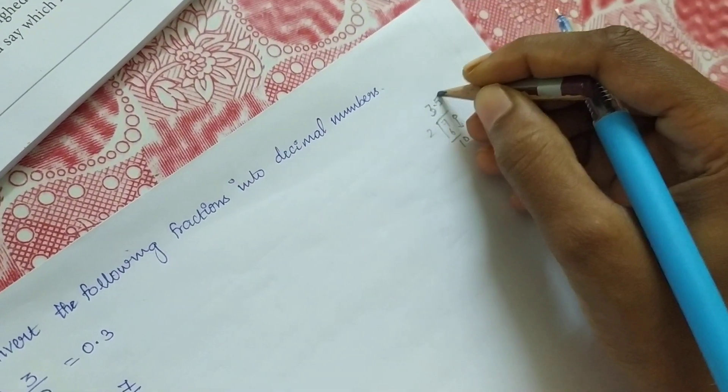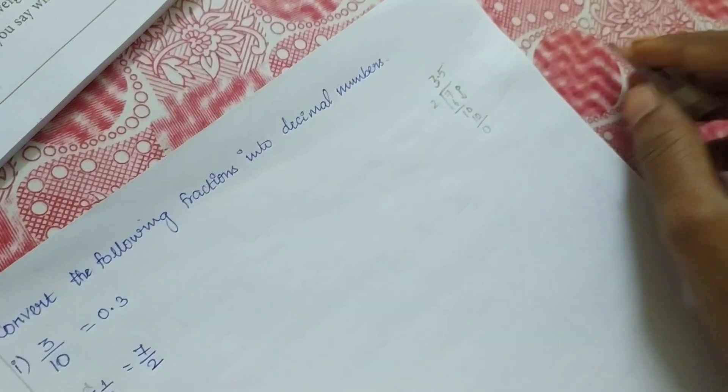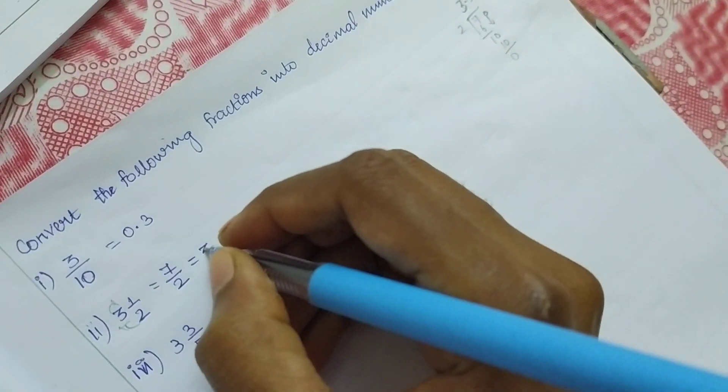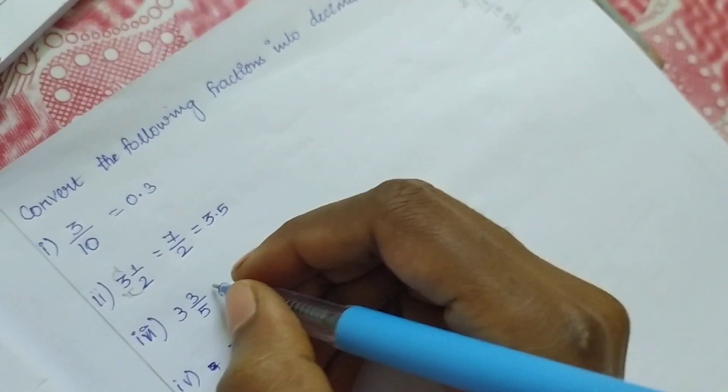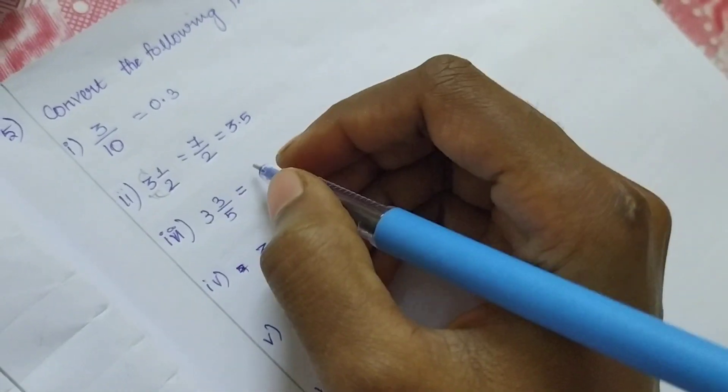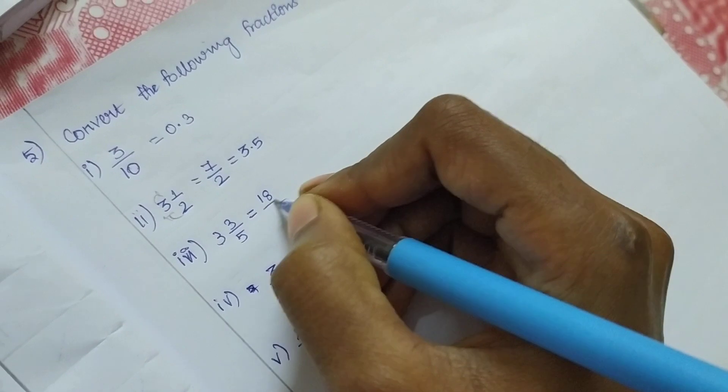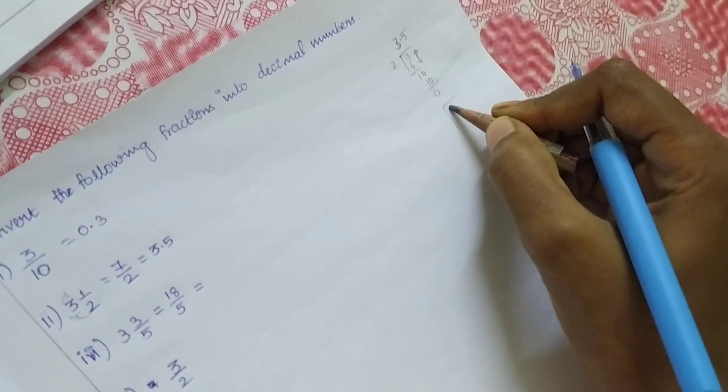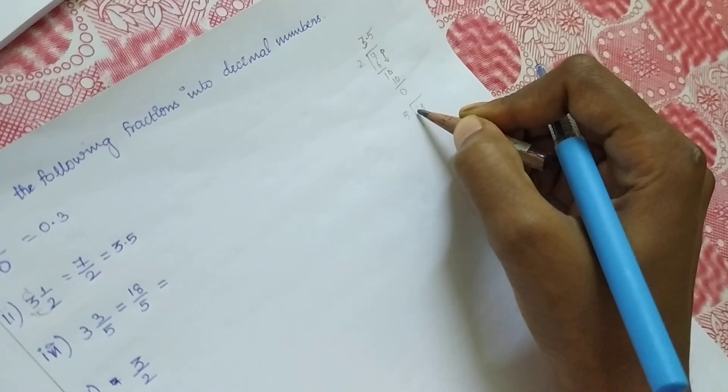Then when you're getting 10, 5 times 2, so it will come to 3.5. Again, a mixed fraction: 5 × 3 = 15, 15 + 3 = 18, so 18/5. Divide 18 by 5.